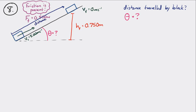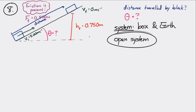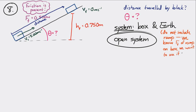At the end, when it reaches its highest point, it's at rest. If we make the system the box and the Earth, it'll be an open system. I'm not going to include the ramp in this system because I need to incorporate the friction force using the work done by friction. The only way to incorporate that force is through the work it does.